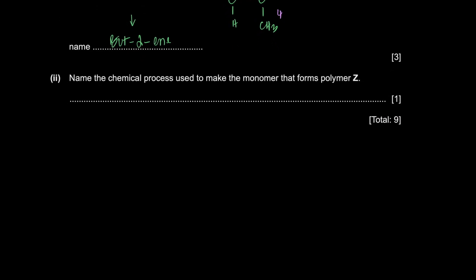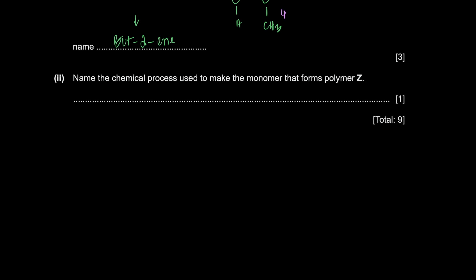In the chemical process used to make the monomer that forms polymer Z, how can you break a long chain of a hydrocarbon into a smaller chain? Does that sound familiar? Well, they're referring to cracking. What fun. Plot twist. I think we're done with organic.